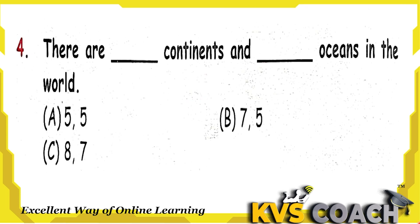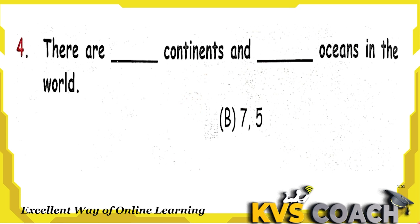Next question: there are how many continents and oceans in the world? The right answer is there are seven continents and five oceans in the world.